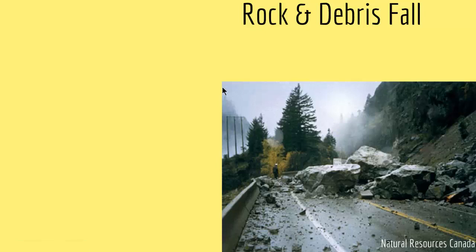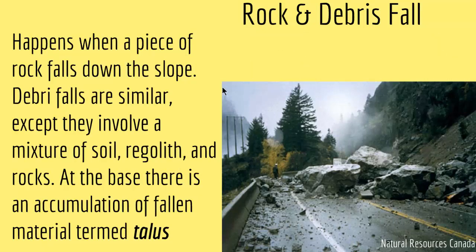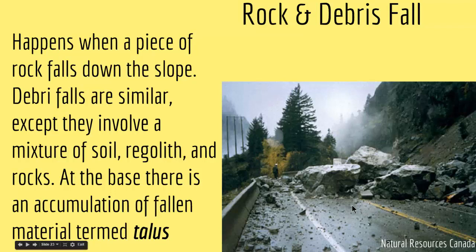Next, rock and debris falls happen when a piece of rock falls down the slope. Debris falls are similar except they involve a mixture of soil, regolith, and rocks. At the base, there is an accumulation of fallen materials termed talus. As you can see in this picture, big chunks of rock create mass wasting and slide down the slope, with coarser or finer material collecting at the base in the talus region.